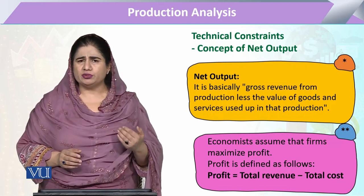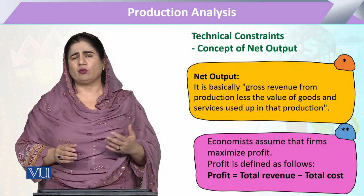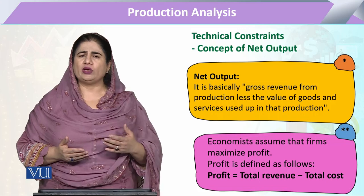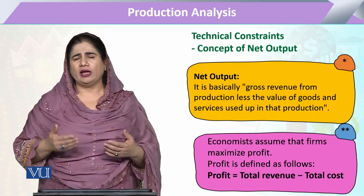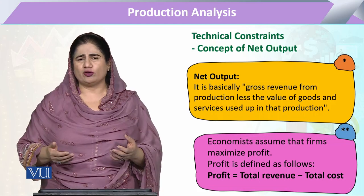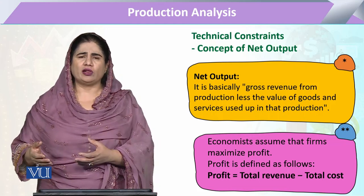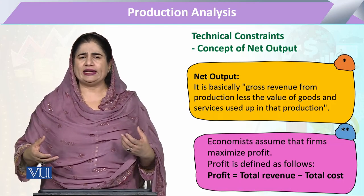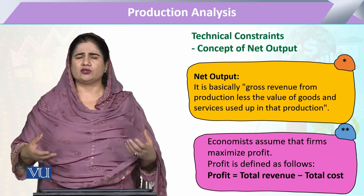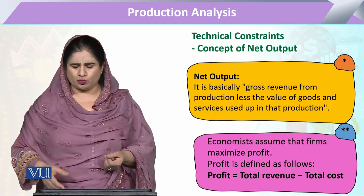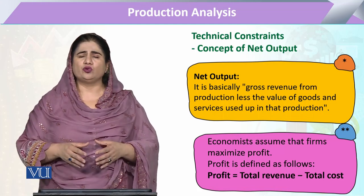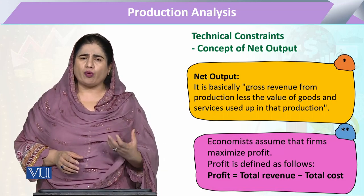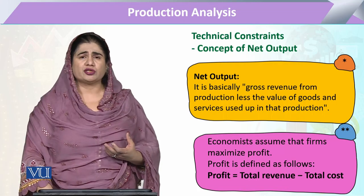When we have a certain objective function and at the same time certain technical constraints, in the decision of net output our objective function is the total output, and our technical constraint is the utilization of all inputs and their prices. With the combination of the objective function and technical constraints we develop net output, which economists mostly refer to as the profit of an entrepreneur in the production process.